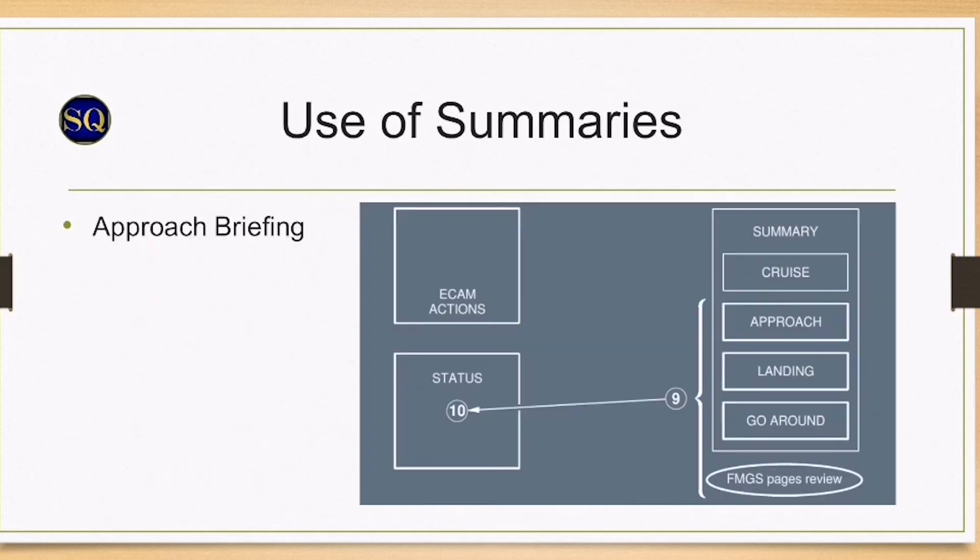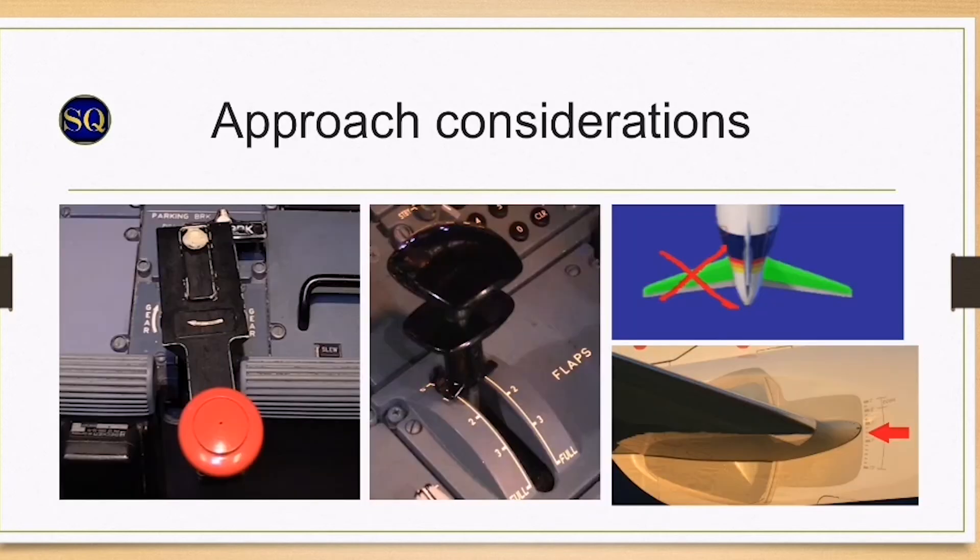Approach consideration: landing gear is gravity extended using the procedure from the QRH summary. No retraction of the landing gear is possible. Configure early as flaps is slow to extend, as only the right elevator is operative. Pitch control is degraded. Selecting gear down puts the aircraft into direct law.